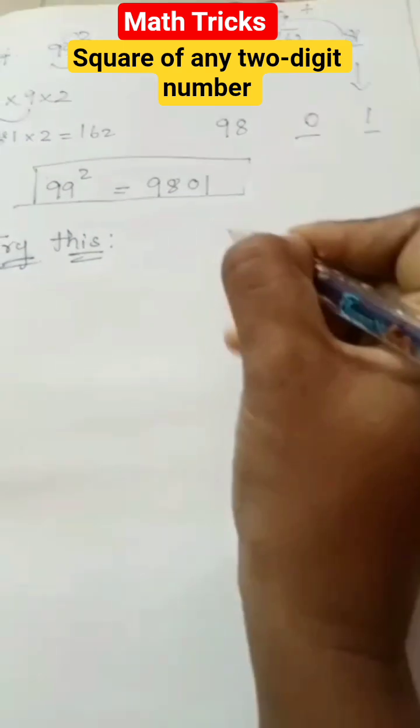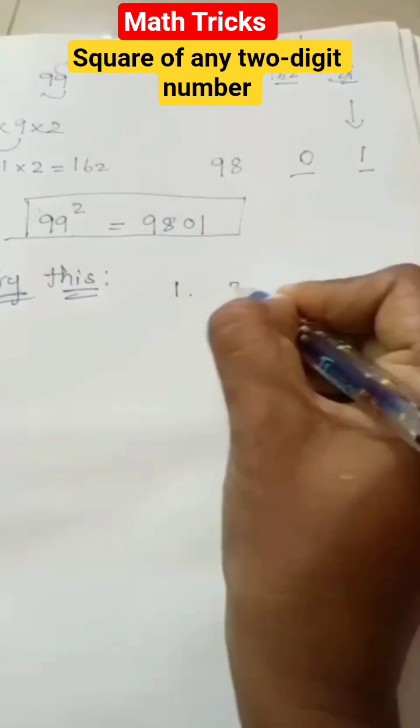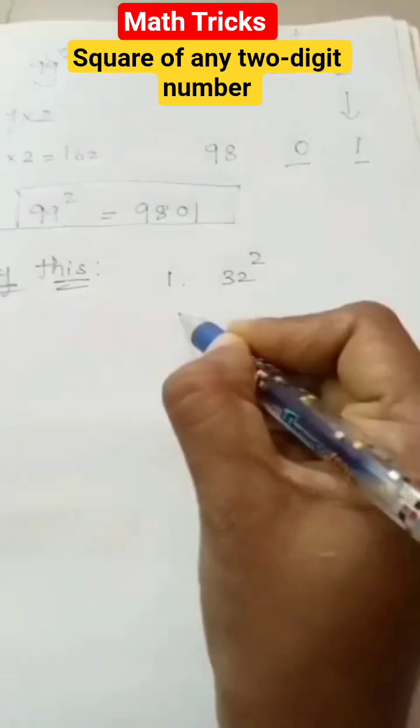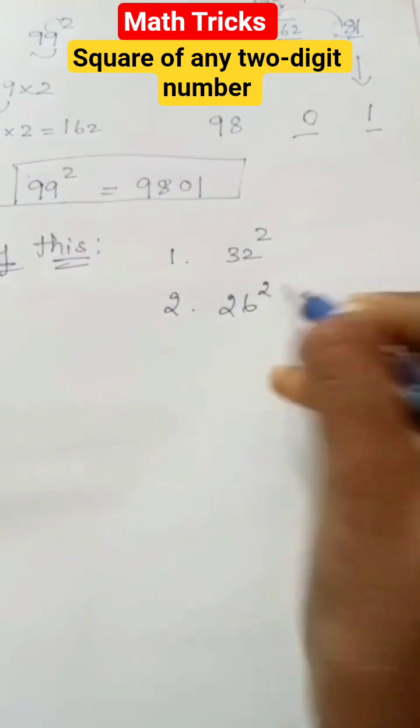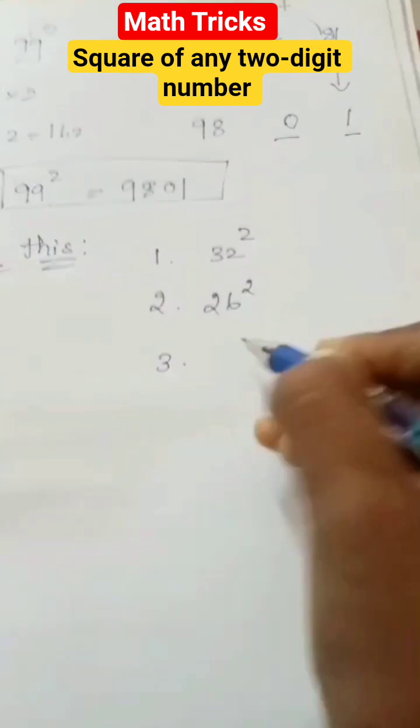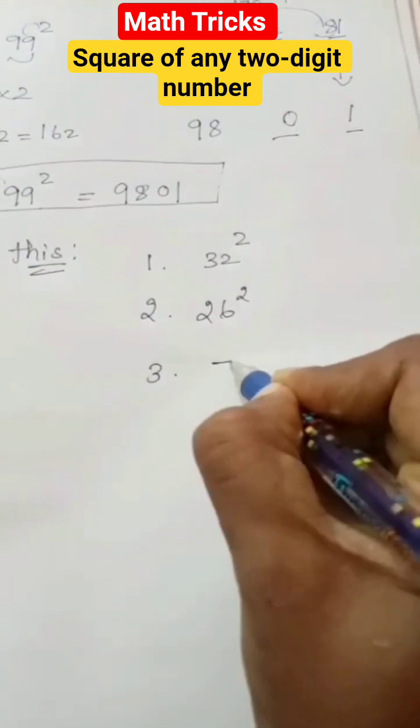This number is 32 squared, 26 squared and 78 squared. Thank you.